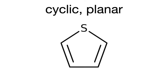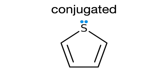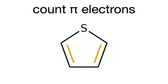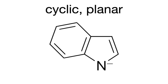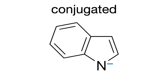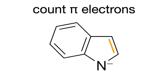Here's another planar heterocyclic molecule. The sulfur has two lone pairs, but only one of which we have to count to complete conjugation — double-single alternation — giving us 6 pi electrons. It's aromatic. Here's another example with a nitrogen with a negative charge. Remember, the negative charge is an extra lone pair that can be counted to complete conjugation. We have double-single alternation throughout, and it has 10 pi electrons. It's aromatic.